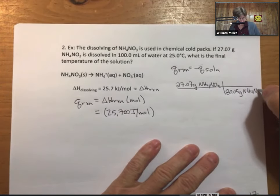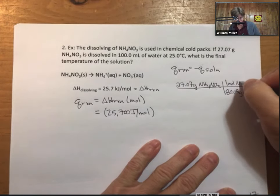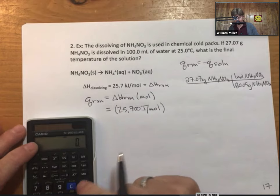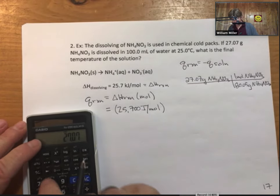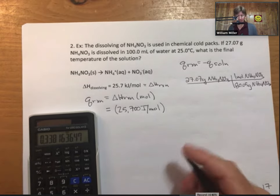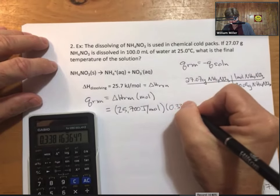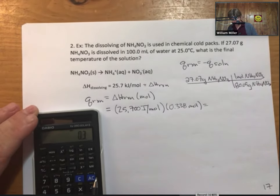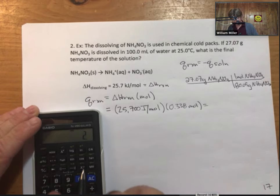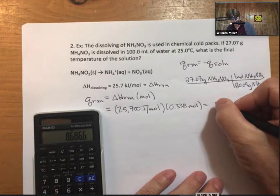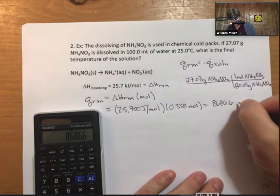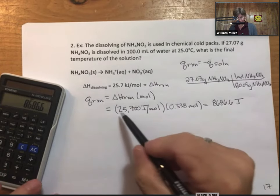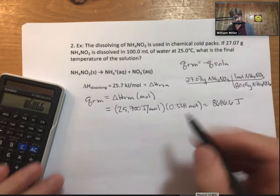27.05 grams of ammonium nitrate. When I multiply this out, I get 0.338 moles. There's only one reactant, so it must be the limiting reactant. I get 8,686.6 joules. That is a q value. I know that my q value for reaction - add a minus sign, I get q solution.